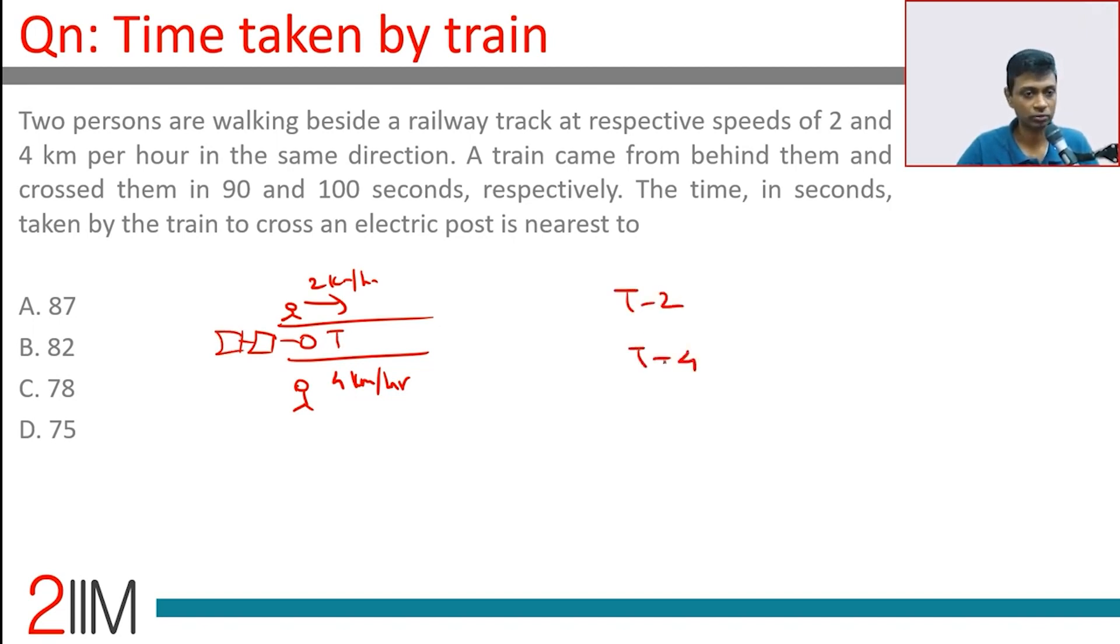And t minus 4. T minus 2 and t minus 4 cross in 90 and 100 seconds. T minus 2 is a faster vehicle, traveled in 90 seconds and 100 seconds. The ratio of the speed should be the opposite of ratio of the times.